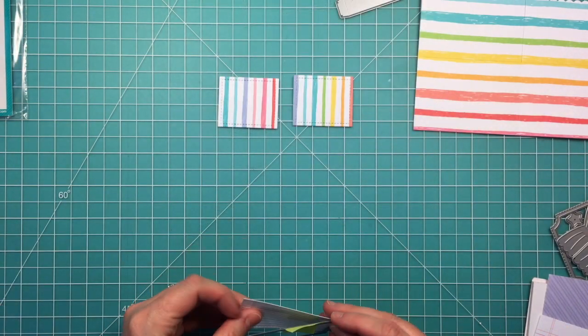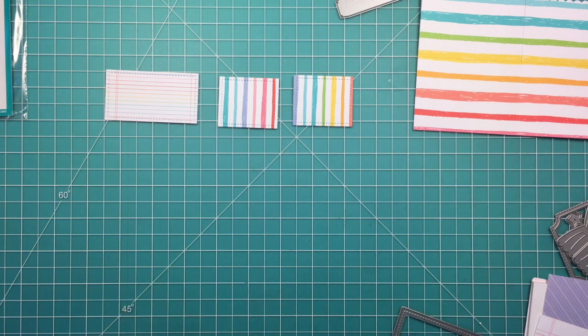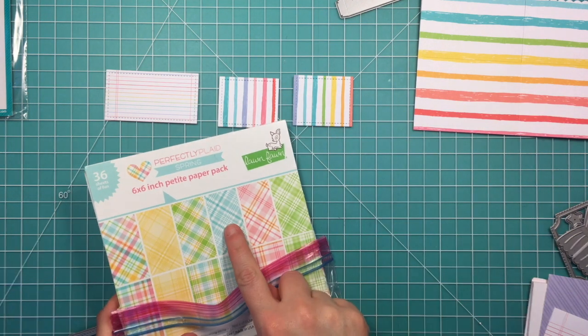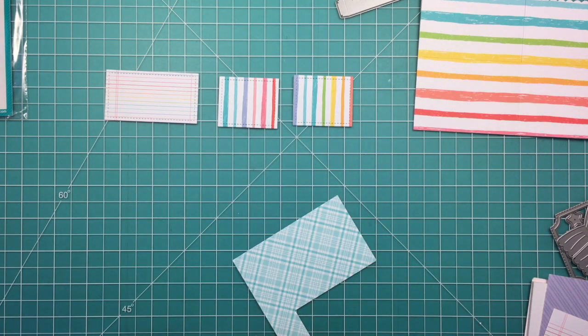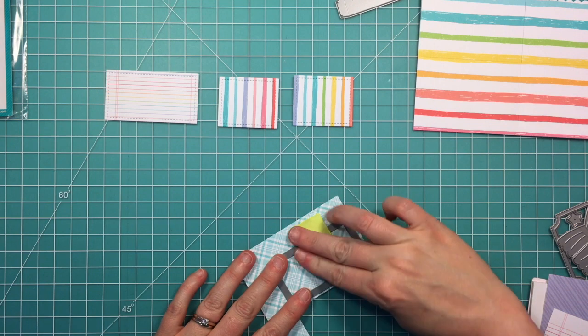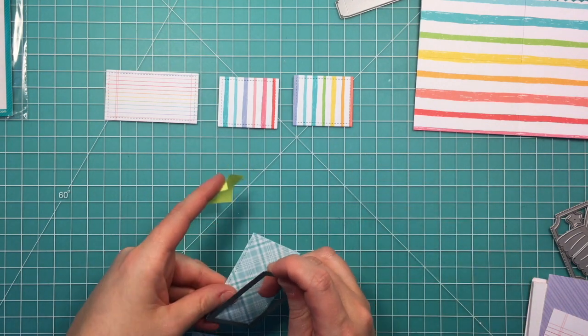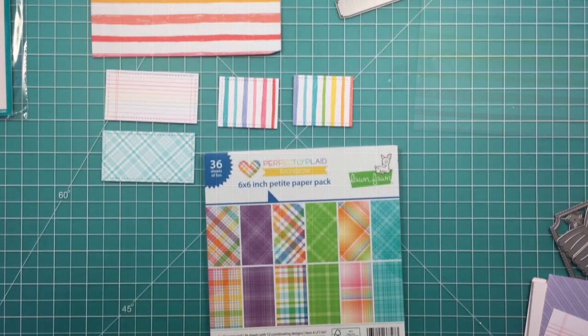I'm also going to be using this paper that kind of looks like notebook paper but with rainbow stripes. That's the piece that I'm going to put on the front of the box and stamp my sentiment on. I wanted it not to be too colorful and too busy. I'm also using a piece of the blue plaid from the Perfectly Plaid Spring Collection and this will go on the back piece and sort of act as the sky for the little scene I'm going to create.